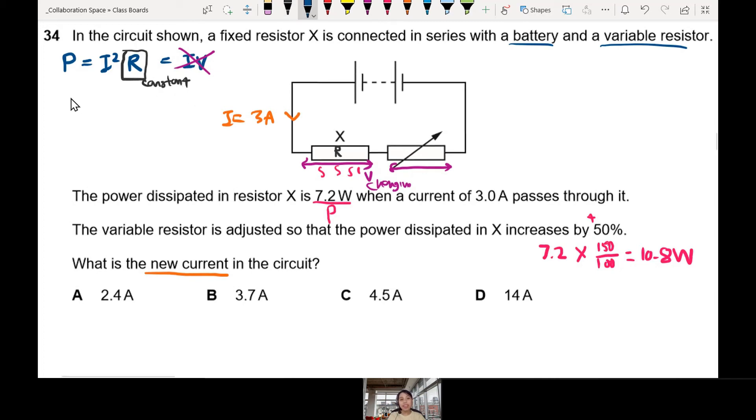Hence, I can say P is proportional to I squared. P over I squared is constant, which is R. Now I do my ratio. In the beginning, power is 7.2 and the current is 3 amps, so 3 squared.